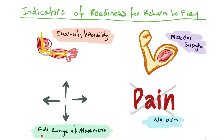Another aspect is full range of movement. If an athlete has suffered an injury to a joint, muscle, or ligament, they need to have full — or close to full — range of movement before returning to activity. For example, an athlete who's had a shoulder reconstruction needs to be able to move that shoulder in all directions and apply pressure before they can return to physical activity.